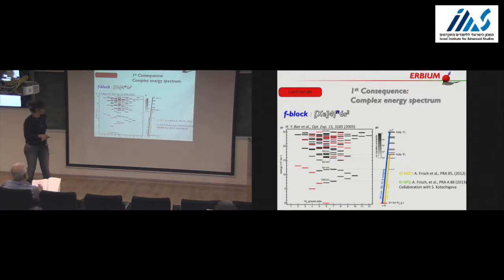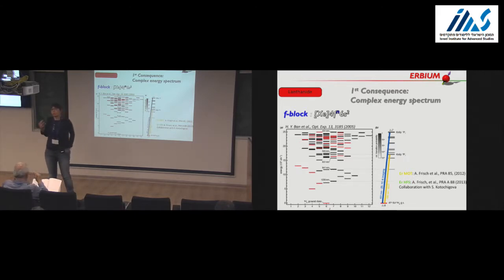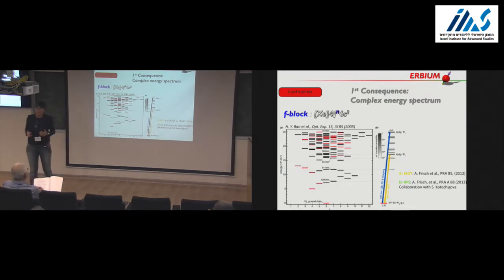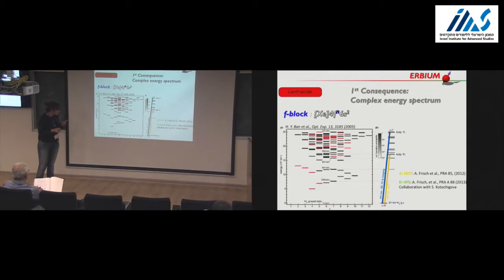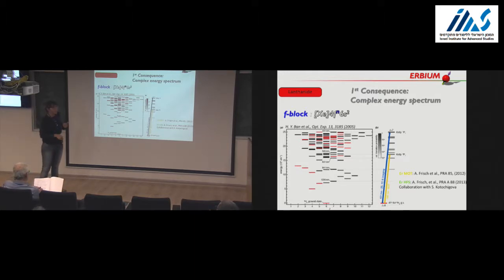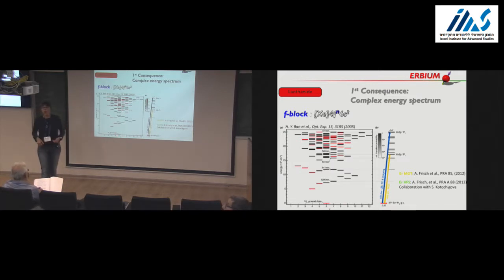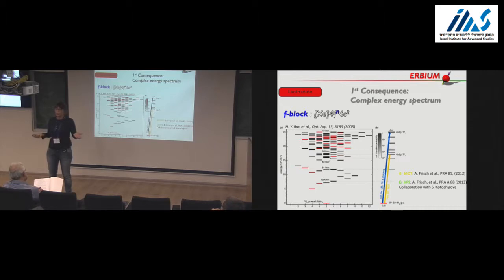This complexity is part of why it took so long to achieve Bose-Einstein condensation of lanthanides — with respect to alkali which have basically two or three important levels, here you have many more, which was a little bit scary. But the community found out that this complexity also gives richness: you can choose the transition you want for laser cooling, with exactly the properties you need. Each optical transition has different strengths, so you select the transition J to J+1 that fits your requirements. You can simply forget about the many other transitions and focus on the one you want.